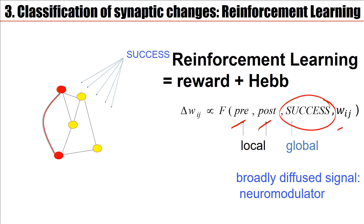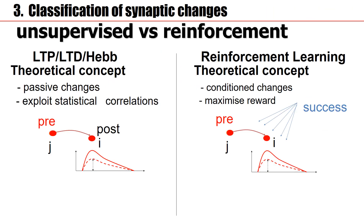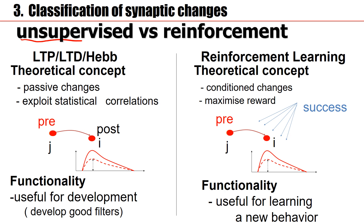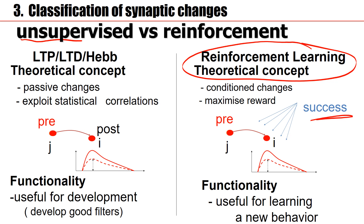In the brain, neuromodulators can take over this role. On one side we have Hebbian learning: it's unsupervised learning, passive changes with no idea of action or success, exploiting statistical correlations between two neurons. With that you can do PCA, ICA — it's good for development, setting up a state representation to develop good filters. With reinforcement learning we have in addition the success signal, and it's useful for learning new behavior, which is indeed the topic of reinforcement learning.